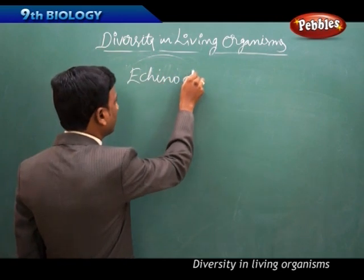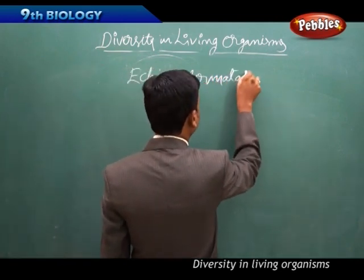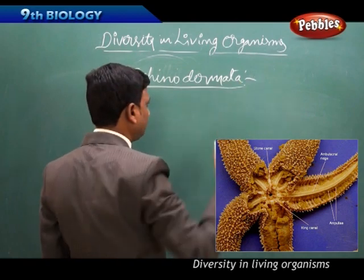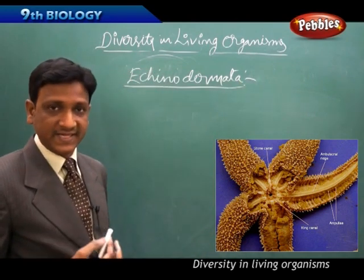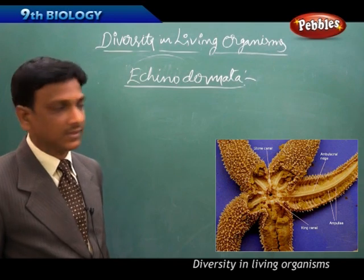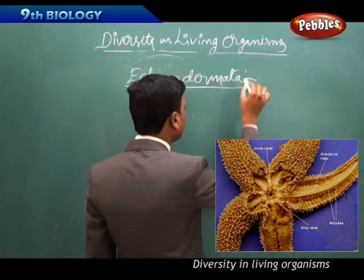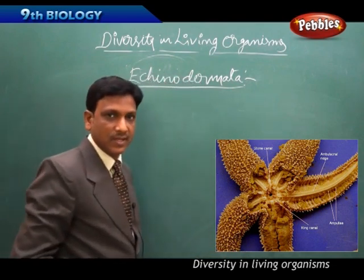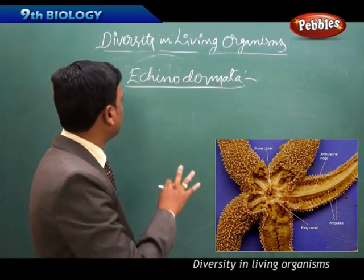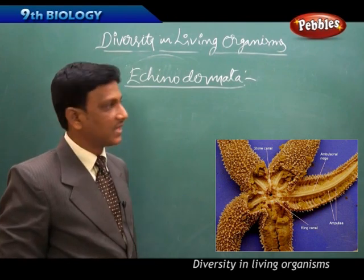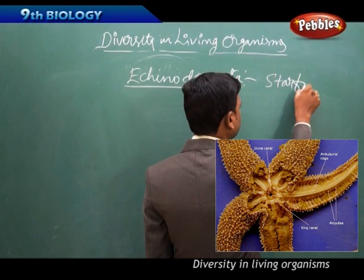The next phylum is Echinodermata. Animals in this phylum have a spiny skin — 'echino' means hedgehog and 'dermata' means skin, so they have hedgehog-like spiny skin. Examples are starfish and sea urchins.